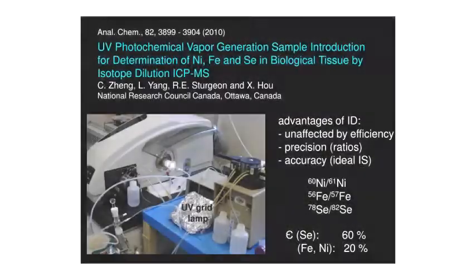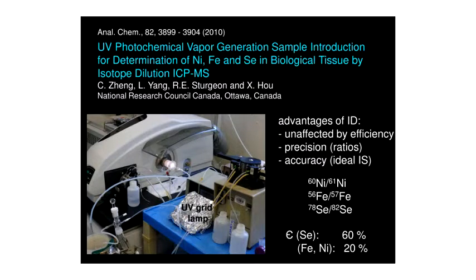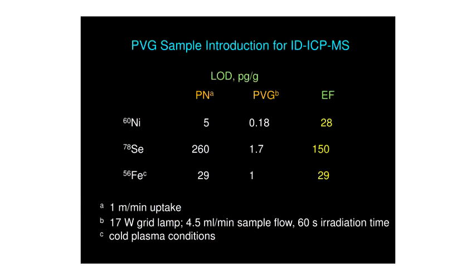As a practical example, we did isotope dilution for determination of nickel, iron, and selenium in a biological tissue. We used a grid lamp for the photochemical reactor, passed it to the gas-liquid separator, and then directly to the ICP. When we look at the limits of detection for pneumatic nebulization versus photochemical vapor generation, we see very substantial enhancements — one reason being sample introduction rate differences, but also a tremendous enhancement in vapor generation efficiency.